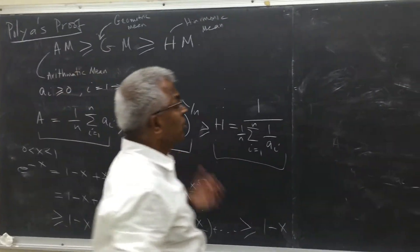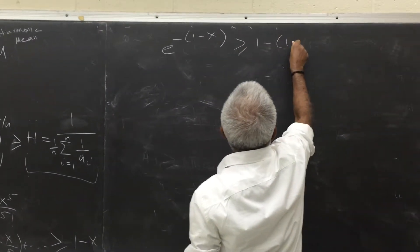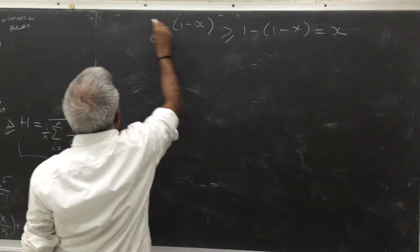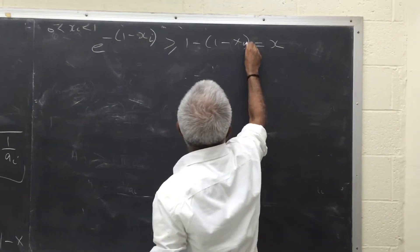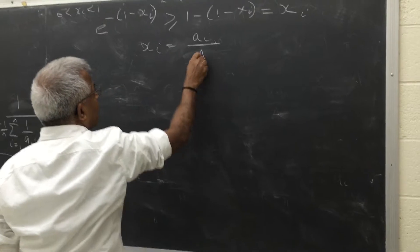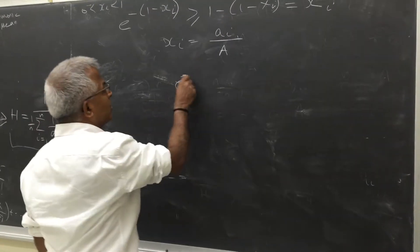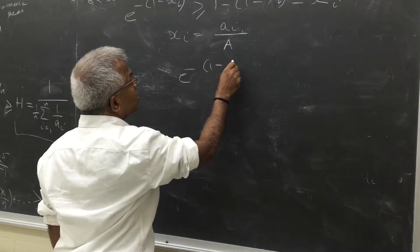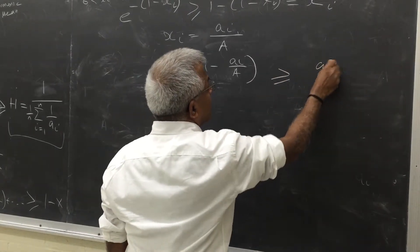There are many ways to prove this inequality. If you replace x by 1 minus x, you also get this inequality. So for any x_i between 0 and 1, this holds. Now as x_i, let me take a_i over ā (where ā is the arithmetic mean). Of course a_i over ā is less than 1, so we can apply this inequality.